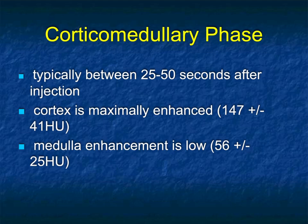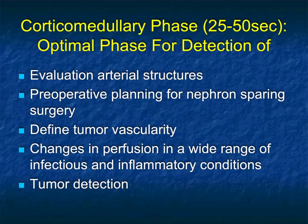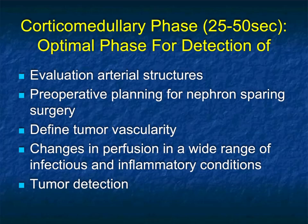Typically we talk about the cortical medullary phase. The way we scan at Hopkins, it's about 30 to 35 seconds post-start of injection. I like to inject four to five cc's per second for 100 to 120 cc's of contrast. The cortex reaches about 150 HU and the medulla 50 to 60 HU, so 90 Hounsfield units is usually the number I quote, though 80–100 is probably a good spread. Early phase imaging gives a good look at arterial structures, and if you have AV shunting from artery to vein, you'll see the vein fill early. It's excellent for preoperative planning for nephron-sparing surgery, renal donors, and partial nephrectomies. Tumor vascularity helps determine clear cell versus papillary or TCC.